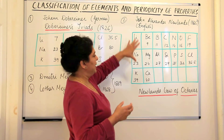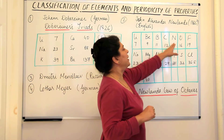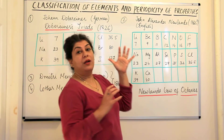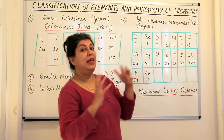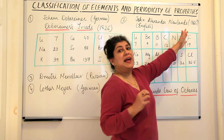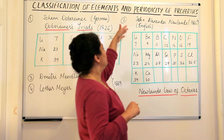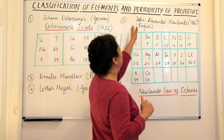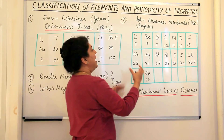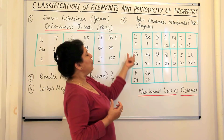He found that lithium, beryllium, boron, carbon, nitrogen, oxygen, fluorine were the first seven elements. Remember, at that time all elements were not known — the noble gases were not known. So after fluorine, the next known element was sodium, and the properties of sodium were a repetition of lithium.